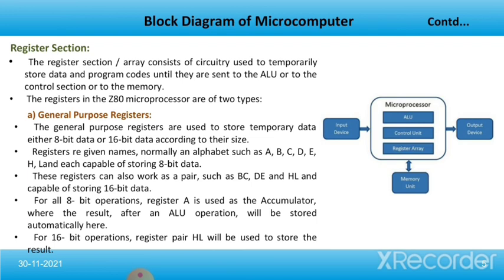The last section of the microprocessor block is the register array or register section. The register section consists of circuitry used to temporarily store data and program codes until they are sent to the ALU, to the control section, or to memory. The registers in the Z80 microprocessor are of two types: general purpose registers and special purpose registers. General purpose registers are used to store temporary data — either 8-bit or 16-bit data according to their size. Registers are given alphabet names such as A, B, C, D, E, H, and L, each capable of storing 8-bit data.